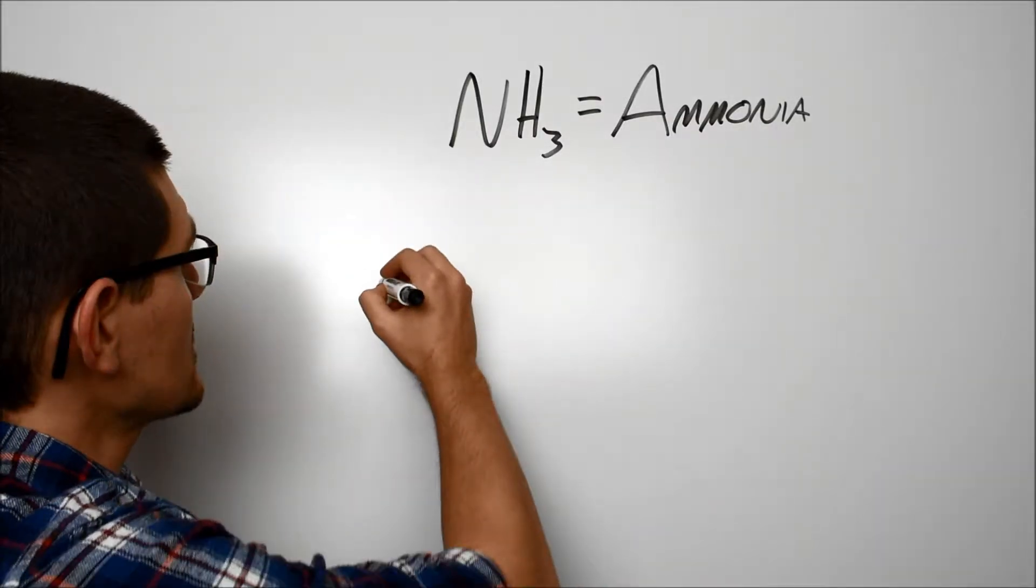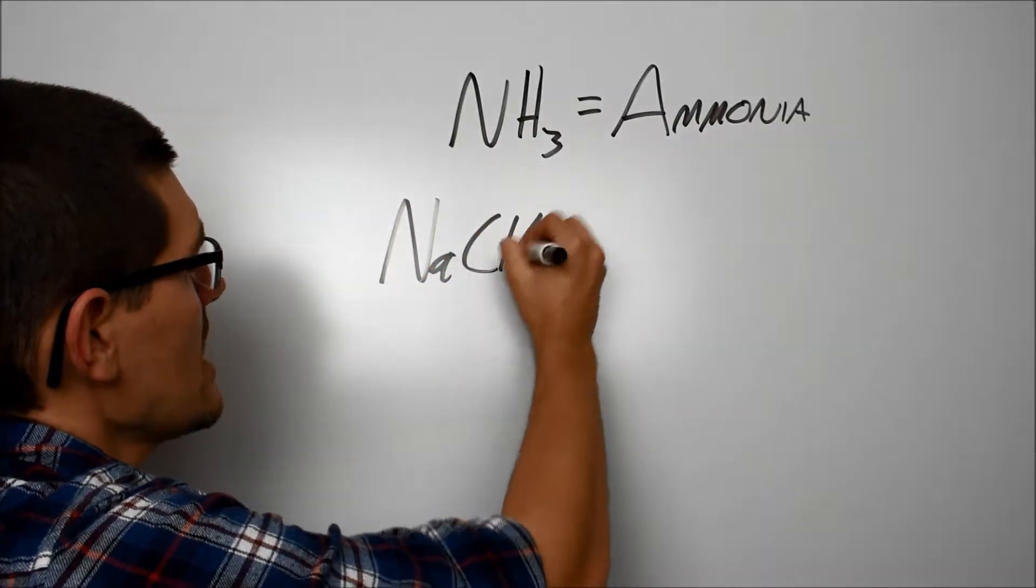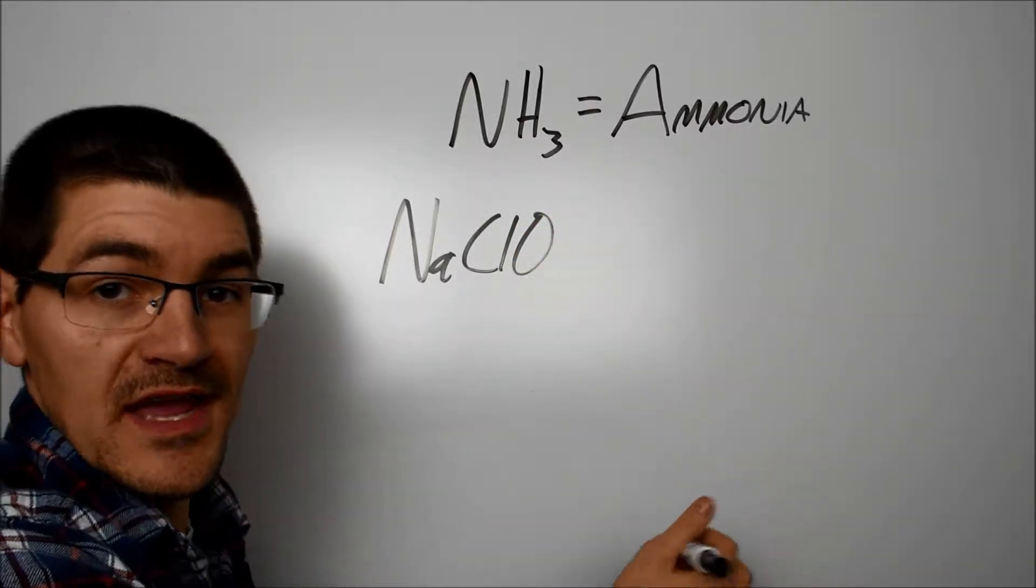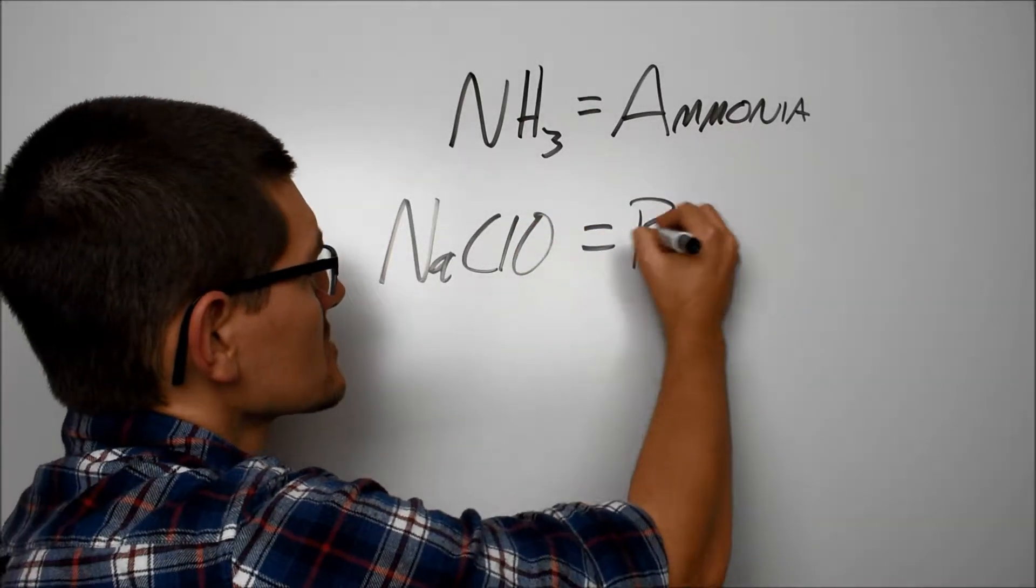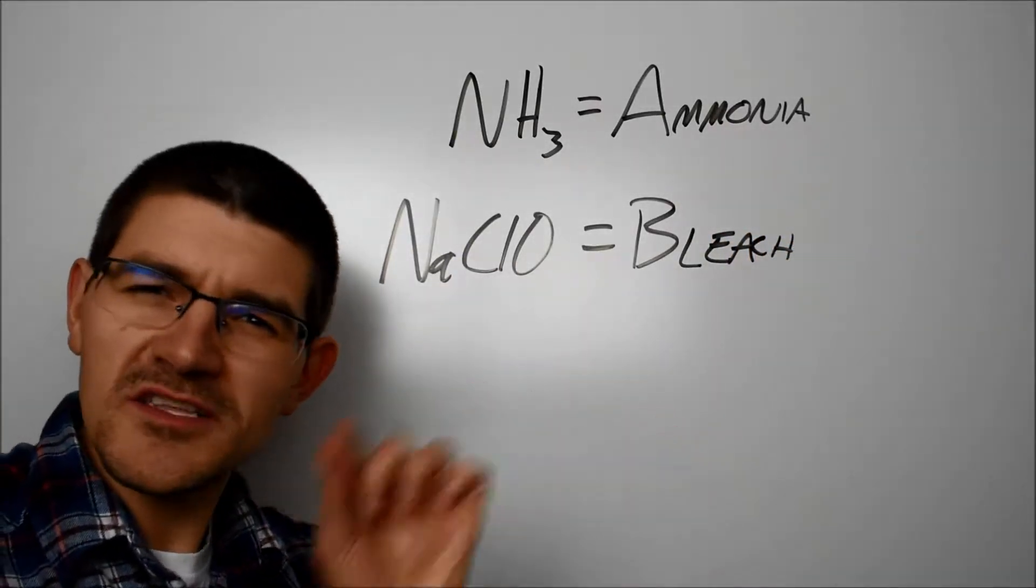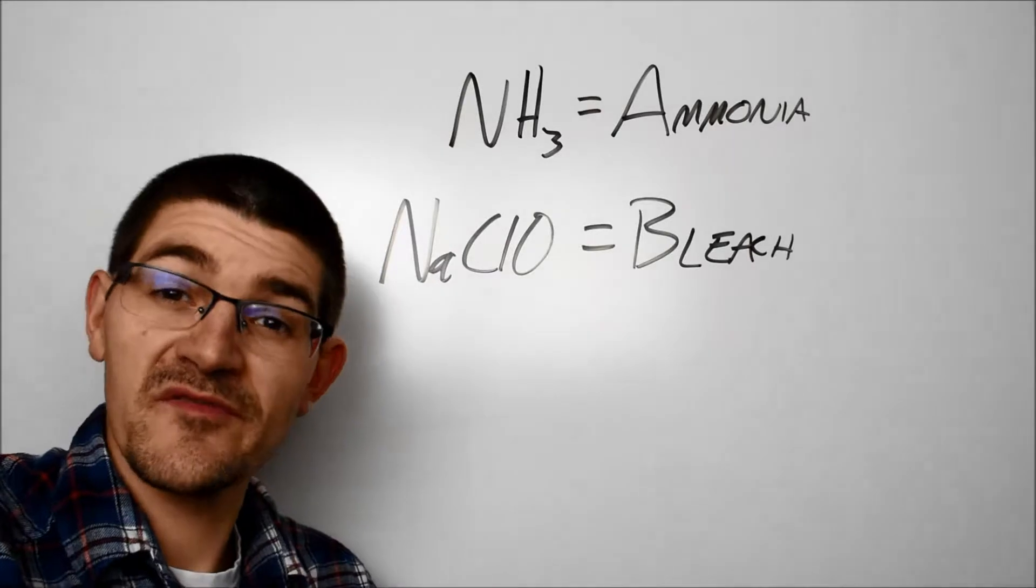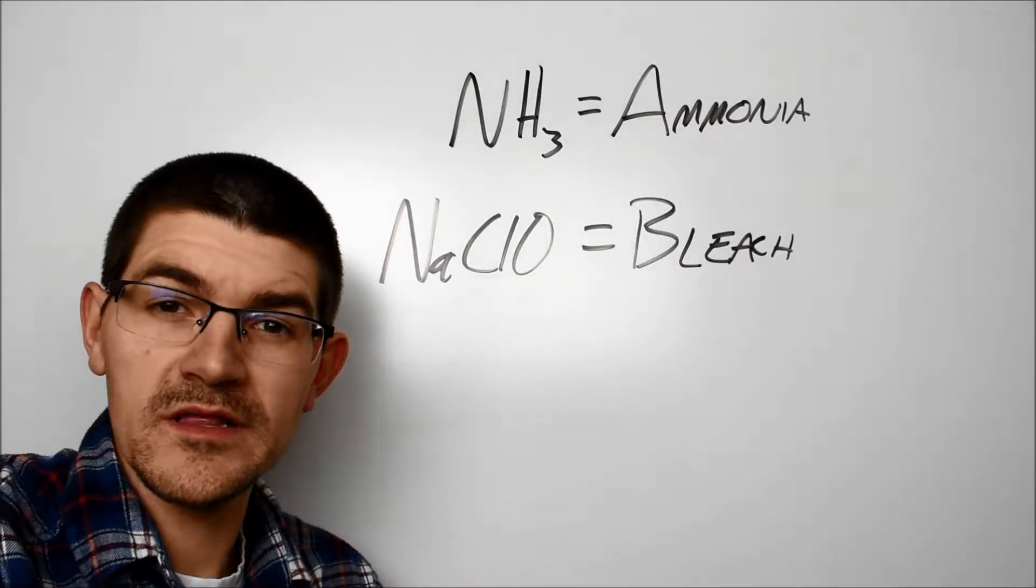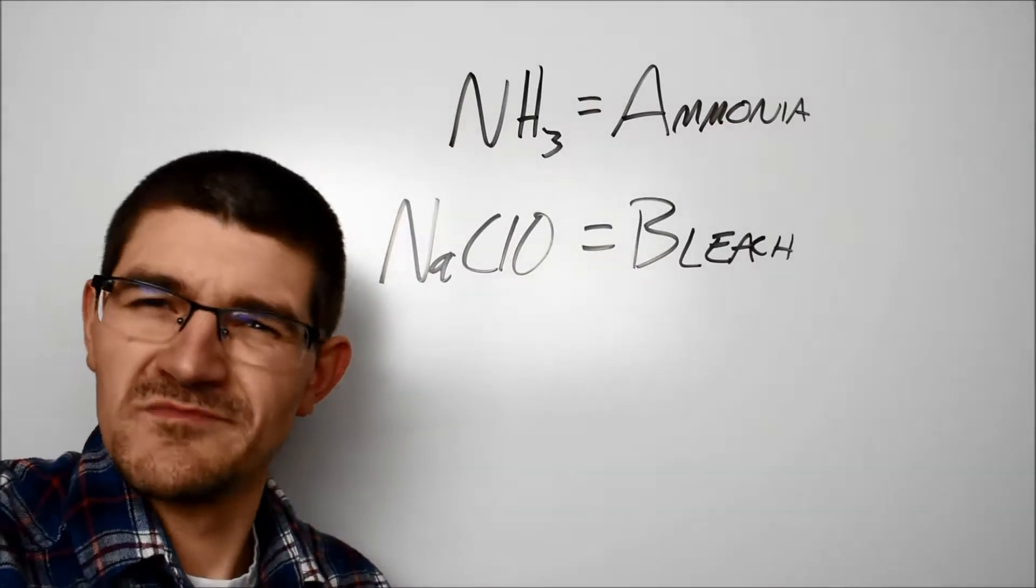Bleach, on the other hand, is almost always an aqueous solution of sodium hypochlorite, NaClO or NaOCl. Doesn't matter. It's the sodium salt of hypochlorous acid, HOCl. For completeness, most bleaches have just a little splash of sodium hydroxide in there to prevent the hypochlorite from decomposing so quickly, but from this point going forward, we're just going to ignore that.